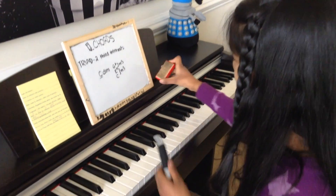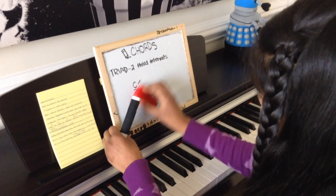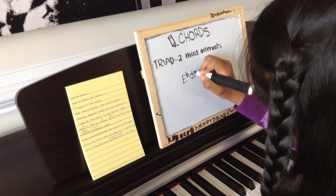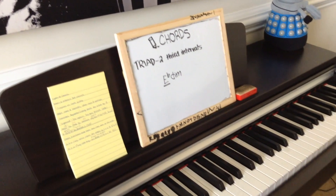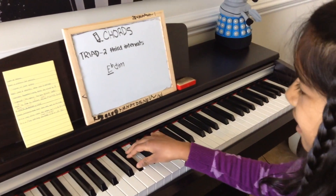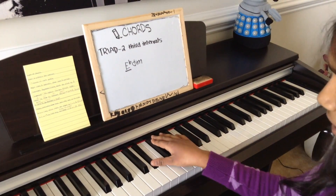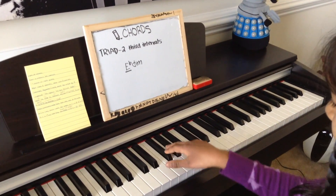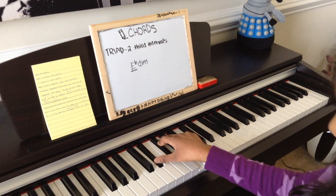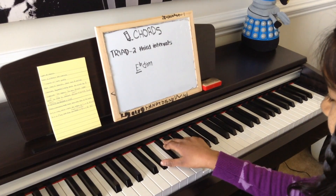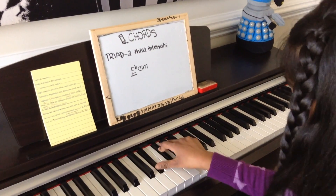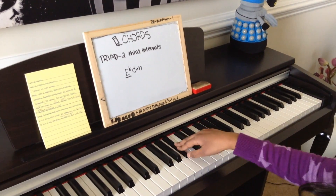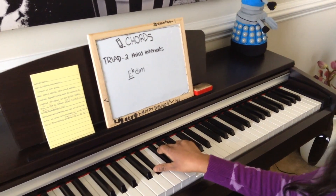Let's try making an E flat diminished chord. You start at E flat and go up a minor third, and then up another minor third from G flat. So you have E flat, G flat, and A — also written as B double flat. That's your E flat diminished.